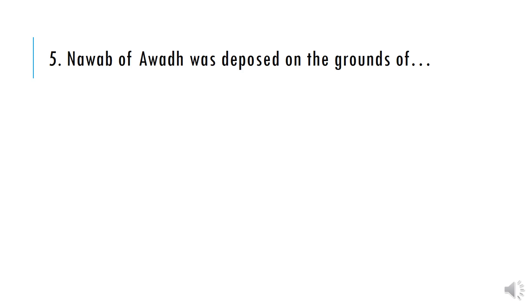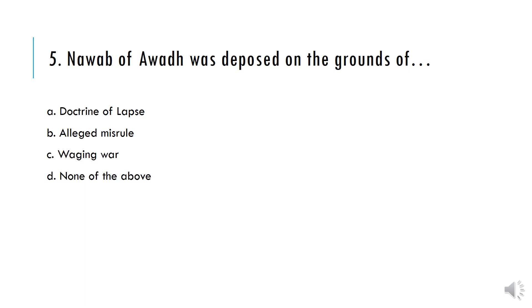Nawab of Avat was deposed on the grounds of: A) Doctrine of Lapse, B) Alleged Misrule, C) Waging Wars, D) None of the above. And the correct answer is Option B — Alleged Misrule.